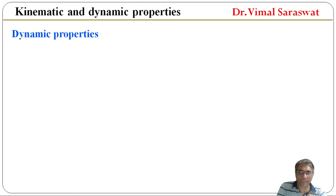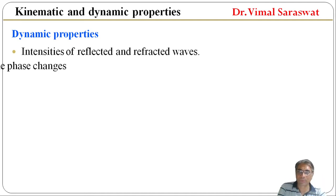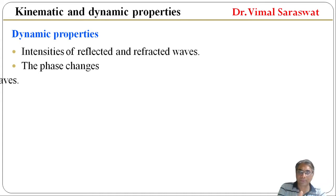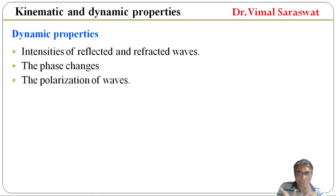Next are the dynamic properties. Dynamic properties include: intensities of reflected and refracted waves (paravartit tatha apvartit tarangon ki tivratayen), phase changes (kala meh parivartan), and the polarization of waves (tarangon ka dhruvan). So intensity of reflected and refracted waves, phase changes, and polarization of waves are the three dynamic properties.